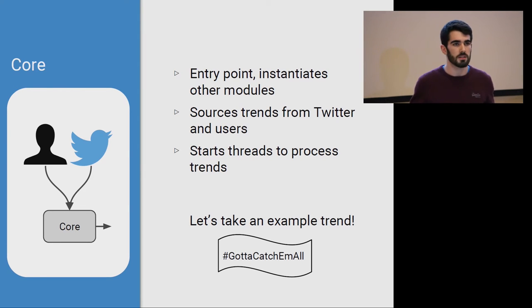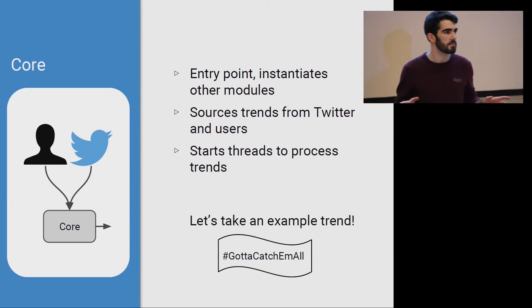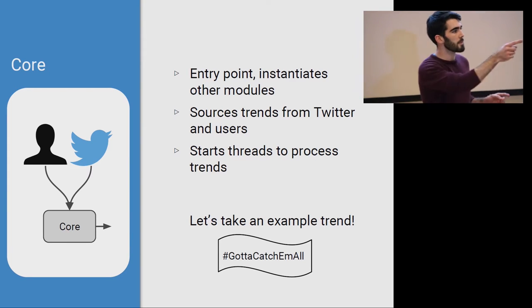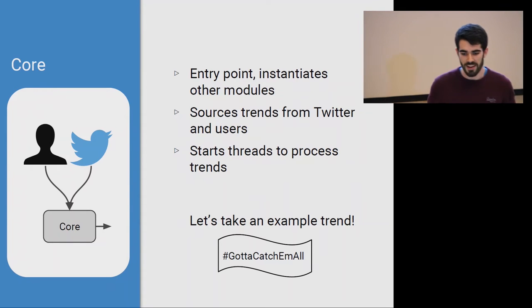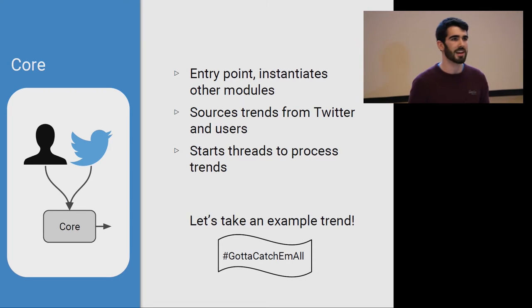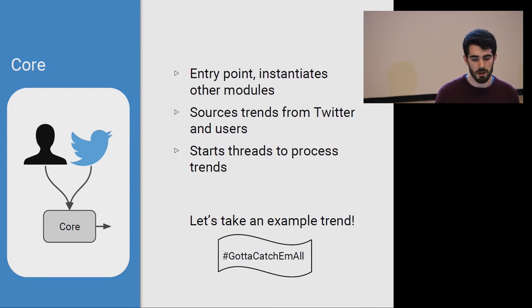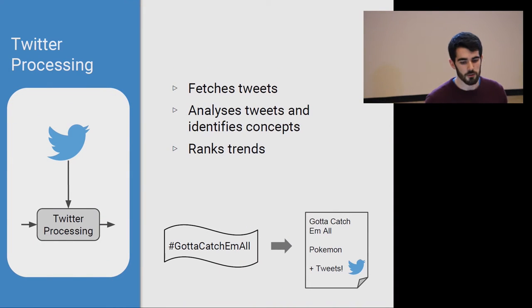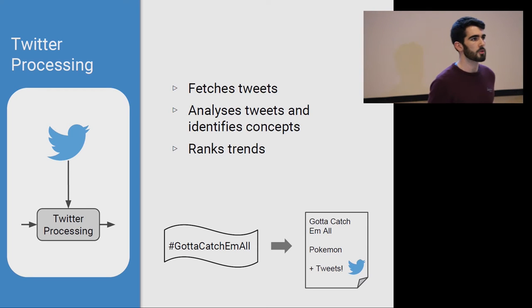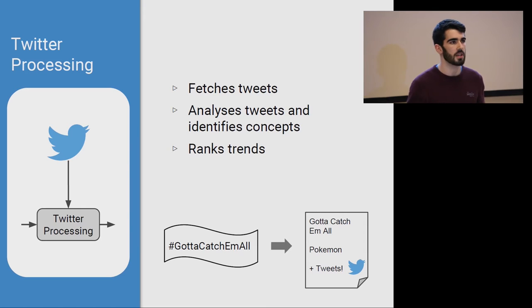The easiest way to look at this is to take an example trend. Does anyone know what was on Saturday? Pokemon Day! Yes, people who definitely aren't in my group. It was Pokemon Day, so naturally hashtag 'gotta catch em all' was trending. Let's follow that and see what happens to it as we go through. Its first stop after the core is the Twitter processing module. This module fetches a sample of tweets from that trend and tries to analyse the content to pick out concepts that we can use to identify Wikipedia articles.